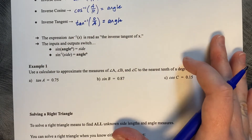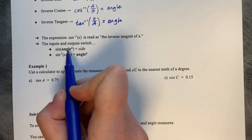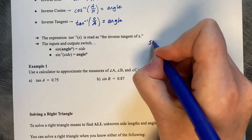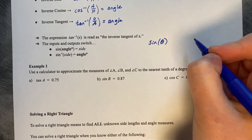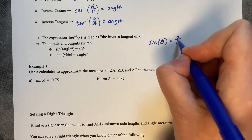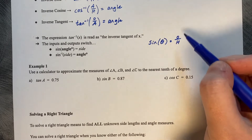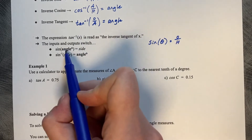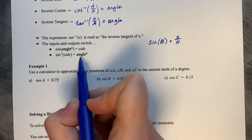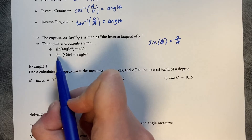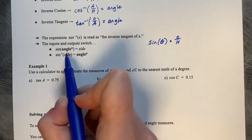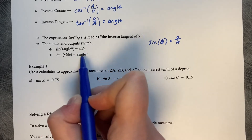Looking at regular trigonometry — the forward direction — the sine of theta equals opposite over hypotenuse, which are side lengths. So: angle in, side length out. But with inverse sine, we switch the inputs and the outputs: side length in, angle out.